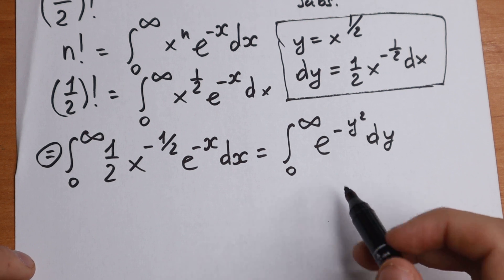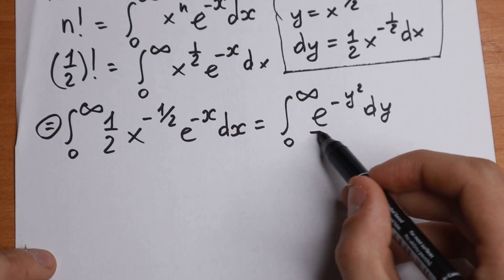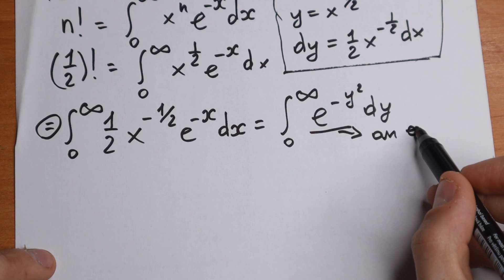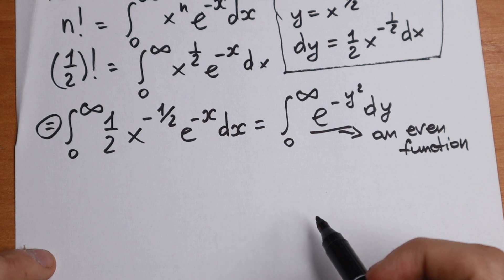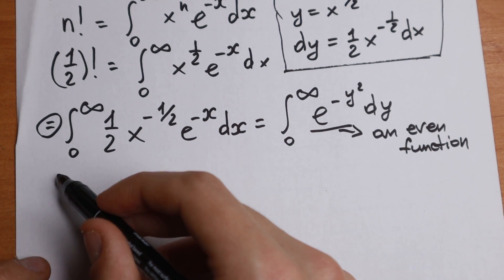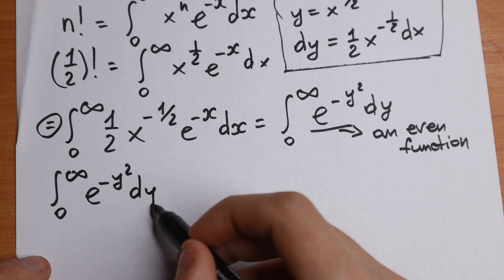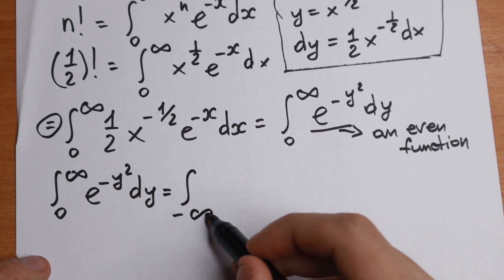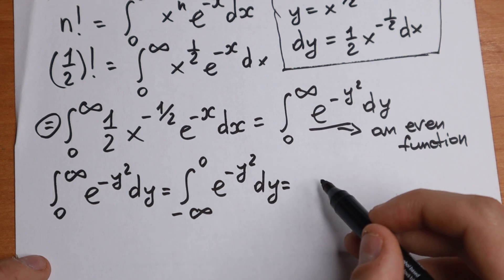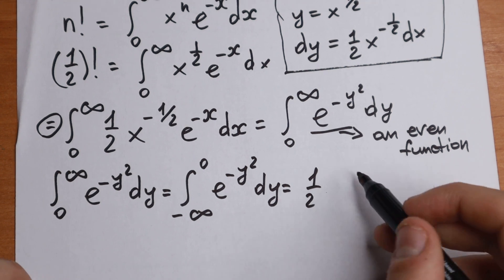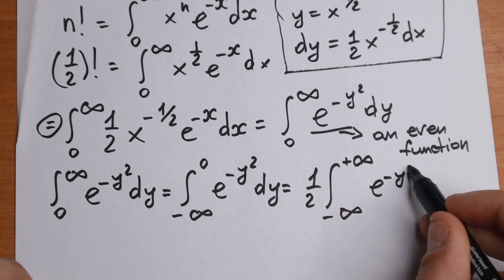Now, since e to the power minus y squared is an even function, we can rewrite it. The integral from 0 to infinity of e to the power minus y squared dy equals the integral from minus infinity to 0 of e to the power minus y squared dy. So it equals one-half the integral from minus infinity to plus infinity of e to the power minus y squared dy.